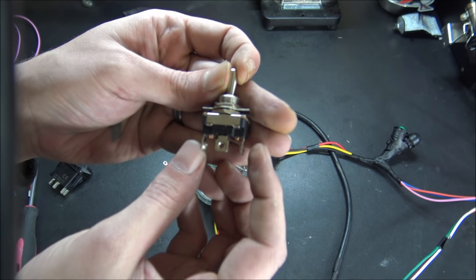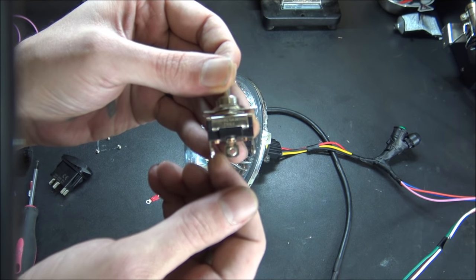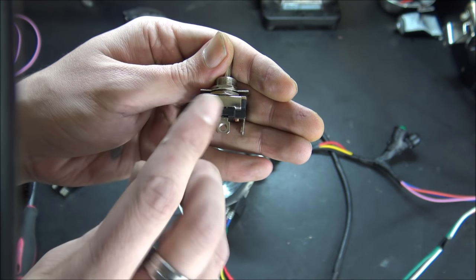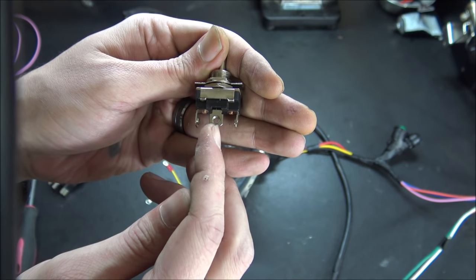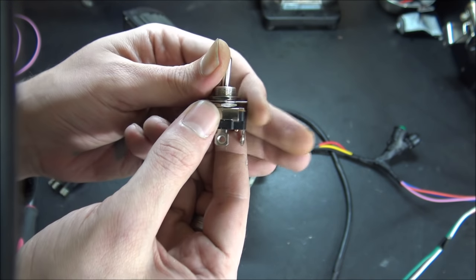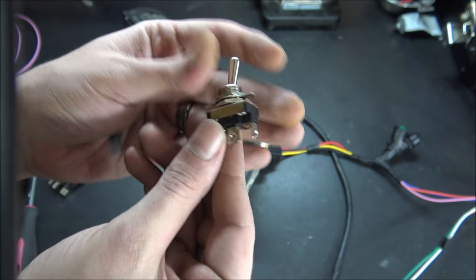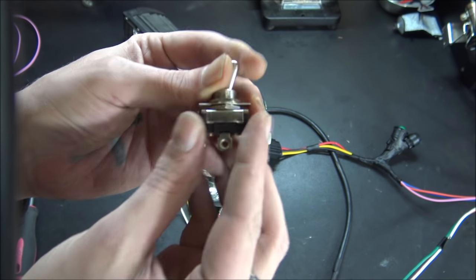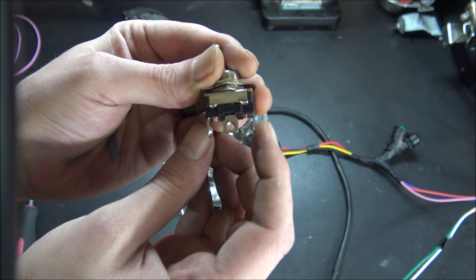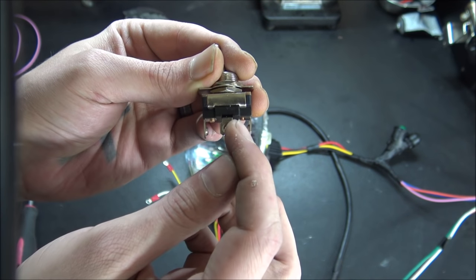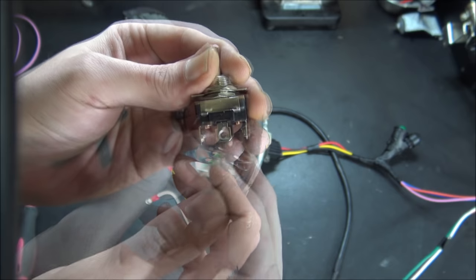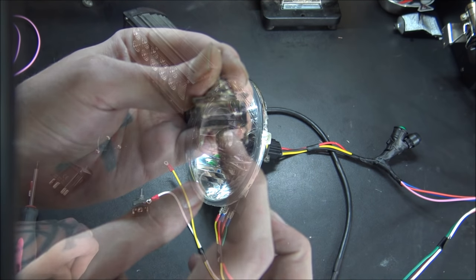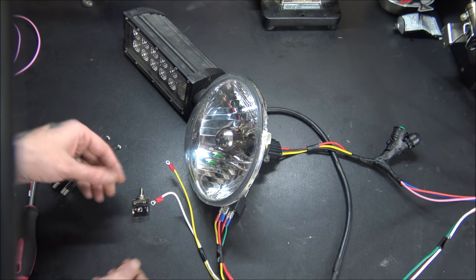Now with the three-way switch, we're going to kind of use it in the opposite way that it's intended to be used. The way it's supposed to be used is power in to the center terminal here. And then when you turn it on, it sends power. When you switch it this way, it'll send power to this terminal. Then when you switch it this way, it'll send power that way. So it's taking one power source and splitting it into two. We're going to do the opposite. We're going to take two power sources and bring them into one.